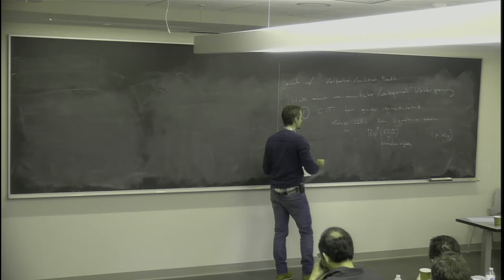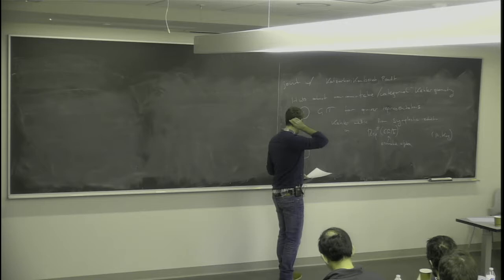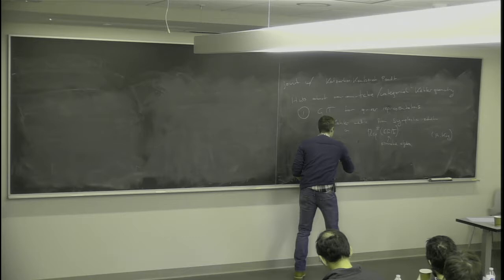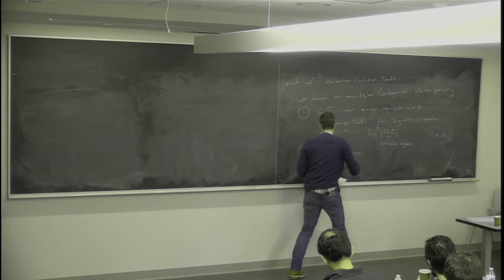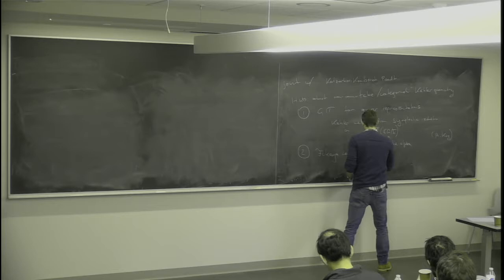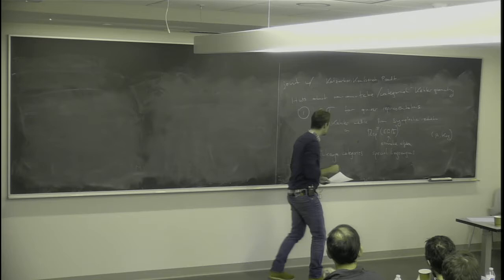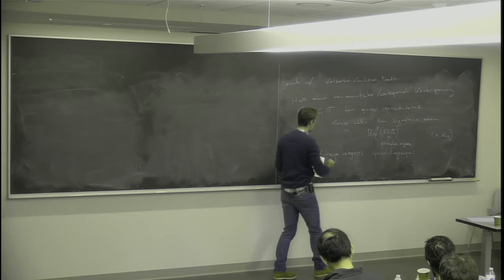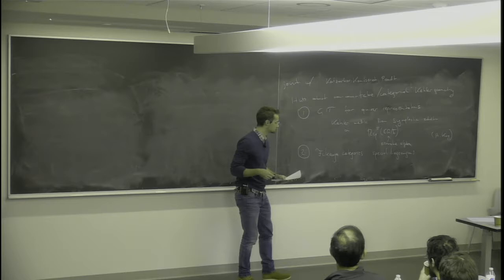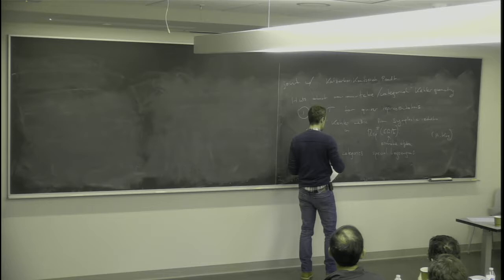On this space of stable representations — say I have some path algebra, some quiver, some associated algebra given to you as a quiver with relations — the Kähler metric doesn't just magically appear. You need to make some choices to get this Kähler metric and talk about what kind of input data you have. This was started by Alston King's investigation into representation theory.